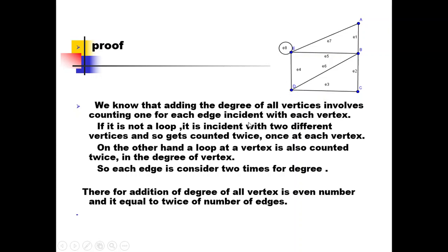If an edge is not a loop, it is incident with two different vertices. For example, edge e3 is not a loop, so it is incident with two different vertices c and d. In this case it is counted twice — once at each vertex — so e3 is counted once at d and once at c.